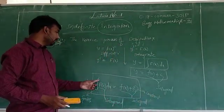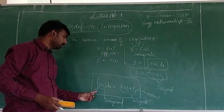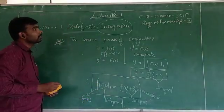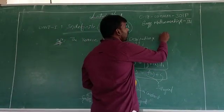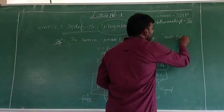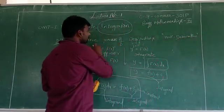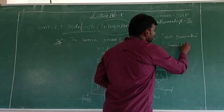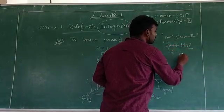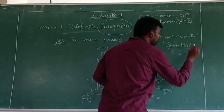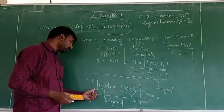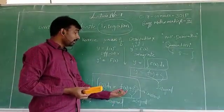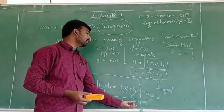The integration symbol looks like a longer letter S. Why? Because the definition of integration is also known as anti-derivative, meaning it is the reverse process of differentiation. It is also called summation, and the first letter of summation is S, so it becomes the symbol of integration. The integrand is the function on which we are performing the integration, and the value we get after integration is called the integral.